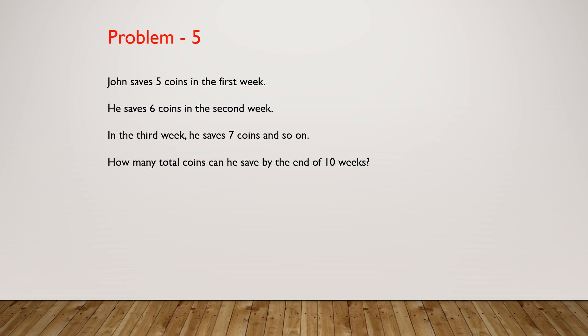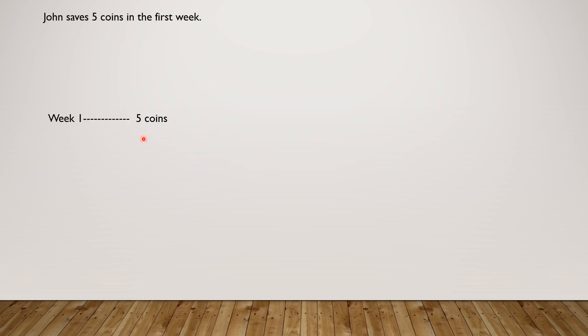Whew, sounds tricky. Let's do this step by step. John saves 5 coins in the first week. Week 1, 5 coins. He saves 6 coins in the second week. Week 2, 6 coins. In the third week, he saves 7 coins and so on. Week 3, 7 coins.